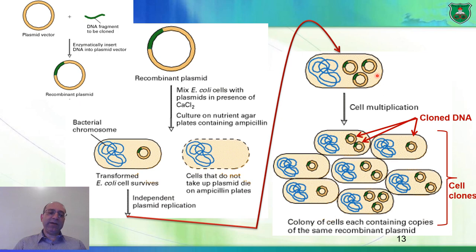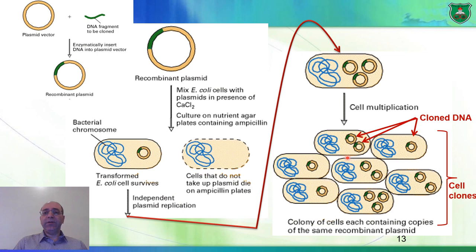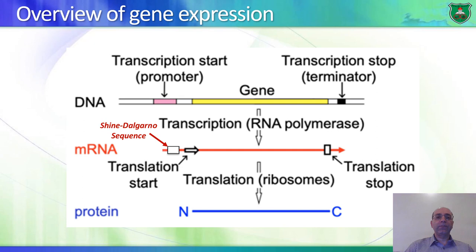Bacterial cells divide every 20 minutes — if we start at 4 in the afternoon and come back at 9 in the morning, we would have billions of cells, each containing multiple copies of the same plasmid, producing a huge amount of plasmids. We can then isolate the plasmid from the bacterial cells, and to release the DNA fragment of interest from the plasmid, we simply add the same restriction endonuclease — it cuts and the fragment is released. That's DNA cloning.